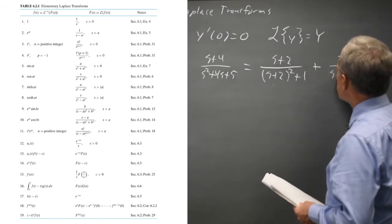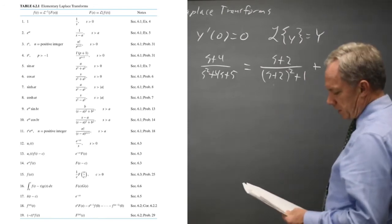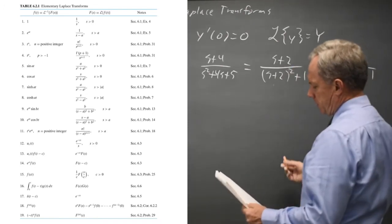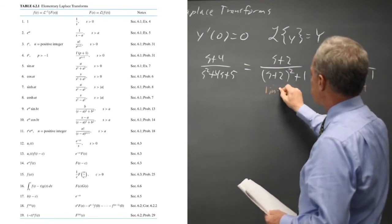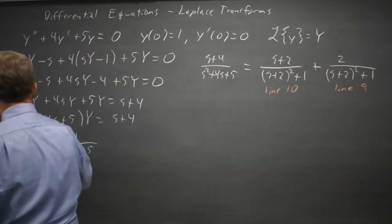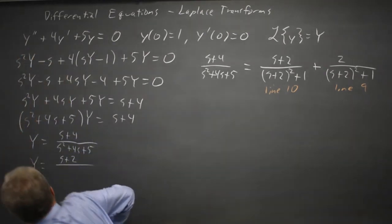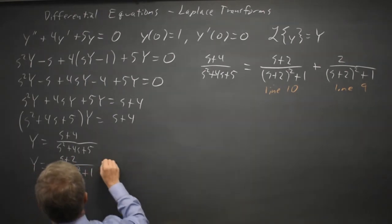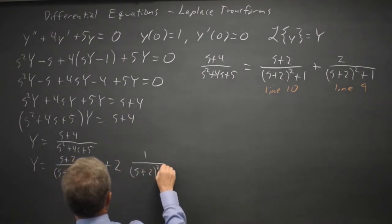And then my remainder is I still have two left over. So s plus two over s plus two squared plus one, and now for my table this would be line nine and line ten. So I can write uppercase Y, the transform of the solution, equals s plus two over s plus two squared plus one, and then plus twice one over s plus two squared plus one.